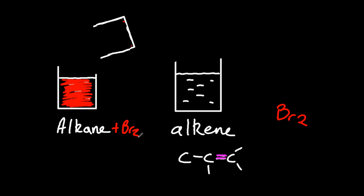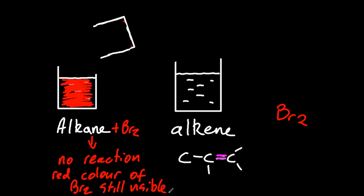If you have an alkane and you add bromine, no reaction. It remains red, the colour of the bromine that you just poured in.